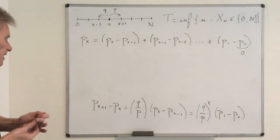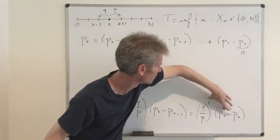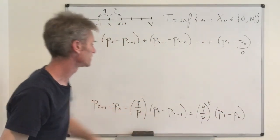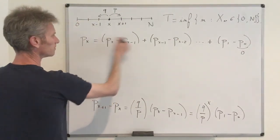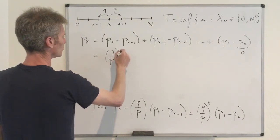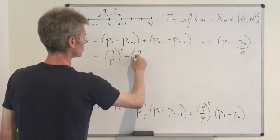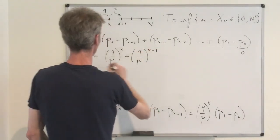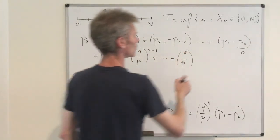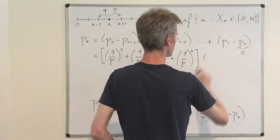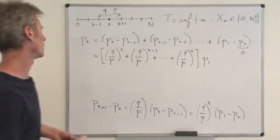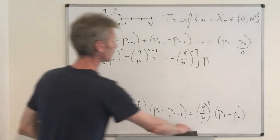Summing the geometric series, we get: P_X equals (Q/P)^{X-1} + (Q/P)^{X-2} + ... + (Q/P)^0, all times P_1. This gives two different expressions depending on whether P and Q are equal or not.